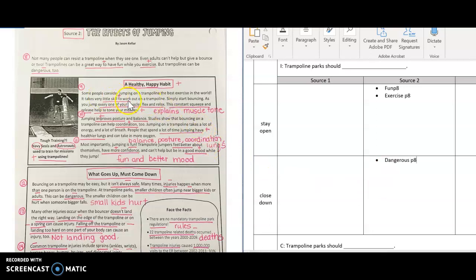Now we're going to continue right here into paragraph 9. So we know that this entire box right here of text supports mostly the positives, and that even reinforced that idea here with this heading, a healthy happy habit. So in paragraph 9, some of the ideas that we discussed were that it takes very little skill to work out. So let's add that to our matrix. Little skill to work out. And that was from paragraph 9.